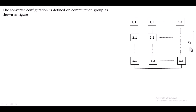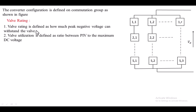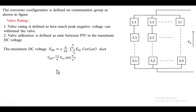The voltage across the two terminals is the DC voltage. Valve rating is the maximum peak inverse voltage that can be withstood by the valve during operation. The valve utilization factor is defined as the ratio of the peak inverse voltage to the maximum DC voltage. The maximum DC voltage equals s × (q/2π) × integral from −π/q to π/q of Em cos(ωt) d(ωt), which evaluates to: Vd_max = s × (q/π) × Em × sin(π/q), where q is the number of devices in a commutation group and s is the number of commutation groups in series.